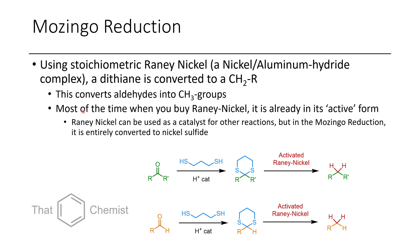The Mozingo reduction works as follows. First, if we don't already have a dithiane, we synthesize it by taking a dithiol — thioacetalization with elimination of water under acid — to give a 1,3-dithiane. Then we treat it with Raney nickel, which cleaves any carbon-sulfur bonds and puts hydrogen in their place. Note that Raney nickel gets fully converted to nickel sulfide here. If we take an aldehyde directly and reduce it, we get a methyl group; from a ketone we get a disubstituted methylene.